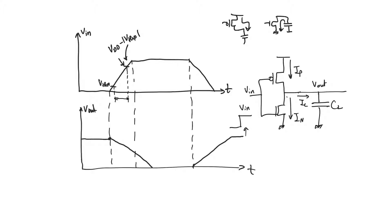This happened before because we assumed the input was a perfect step. With a perfect step, as it turns on the NMOS, it will cut off the PMOS completely and vice versa. Now that it's not a perfect step, there's a range where both transistors are on. If you recall the VTC for the CMOS inverter, there is indeed a range where both transistors are on — a range where both are ohmic, a range where one is ohmic and the other is saturated, and vice versa. So it makes sense that both will be on at the same time.